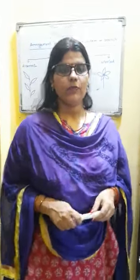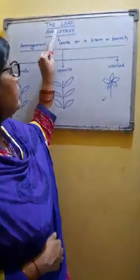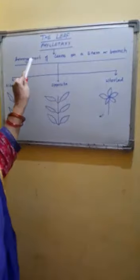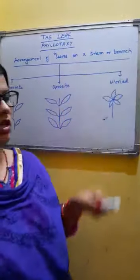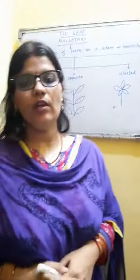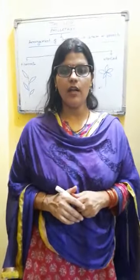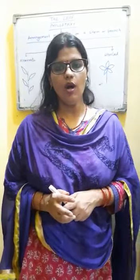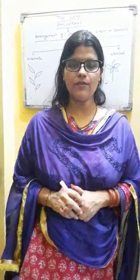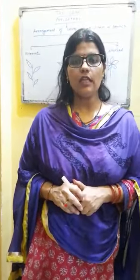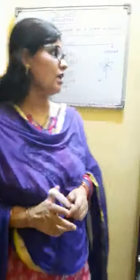Phyllotaxy — this term refers to the arrangement of leaves on a stem or branch. The study of phyllotaxy explains how the leaves are arranged on the stem or on the branch. We are going to study about the arrangement of leaves on the stem or on the branch. Phyllotaxy is of three types.